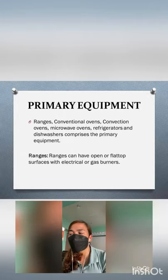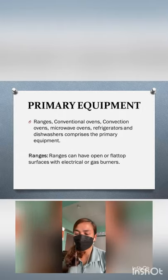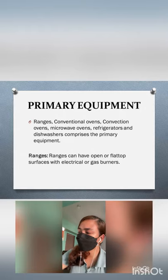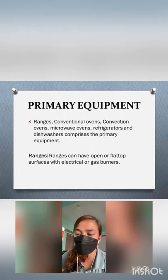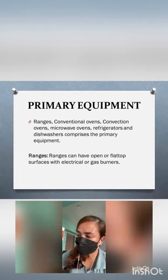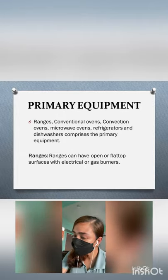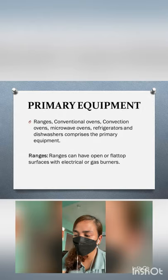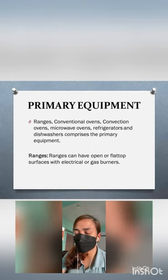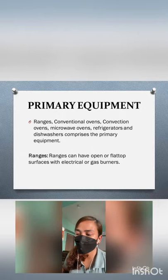Ranges can have open or flat-top surfaces with electrical or gas burners. The range is your kitchen's most versatile appliance. It combines a stove and an oven in a single appliance, offering a convenient way to fry, boil, broil, and bake all your favorites. A cooking range can help make the most out of every meal, every day.